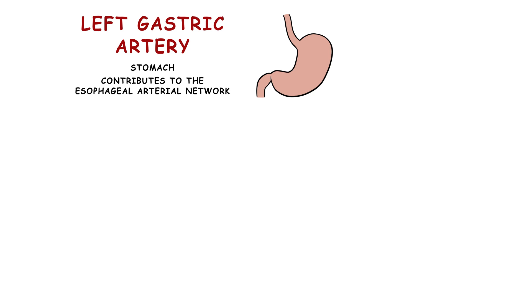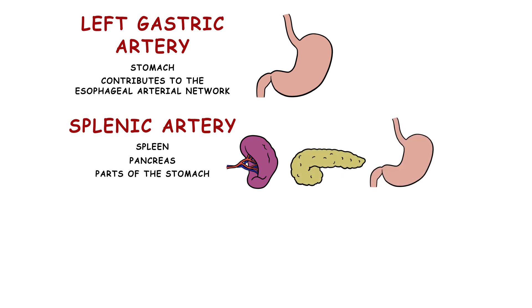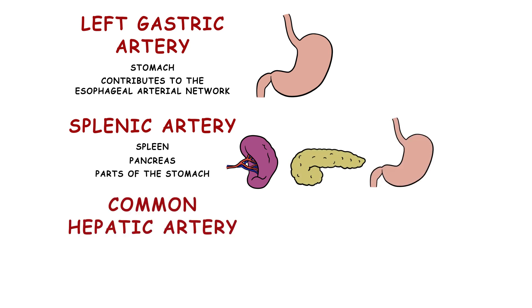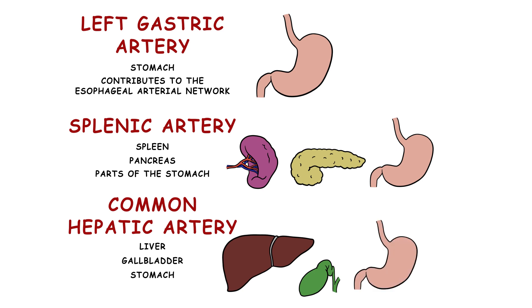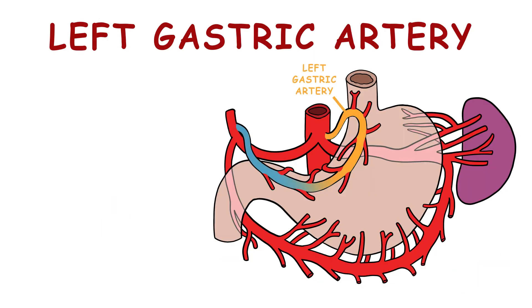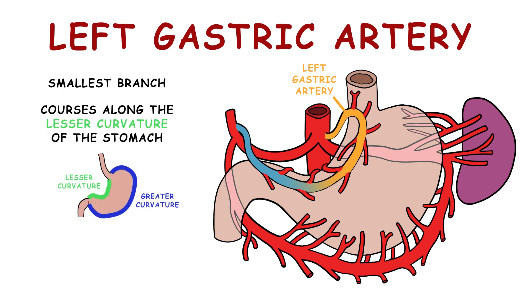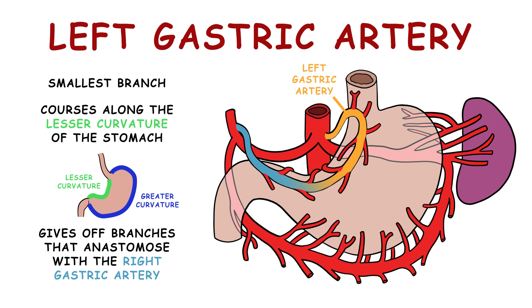The left gastric artery supplies the stomach and contributes to the esophageal arterial network. The splenic artery provides blood to the spleen, pancreas, and parts of the stomach. The common hepatic artery supplies the liver, gallbladder, stomach, and duodenum. The left gastric artery, the smallest branch of the celiac trunk, courses along the lesser curvature of the stomach, giving off branches that anastomose with the right gastric artery, forming a rich network of blood vessels along the stomach's lesser curvature.